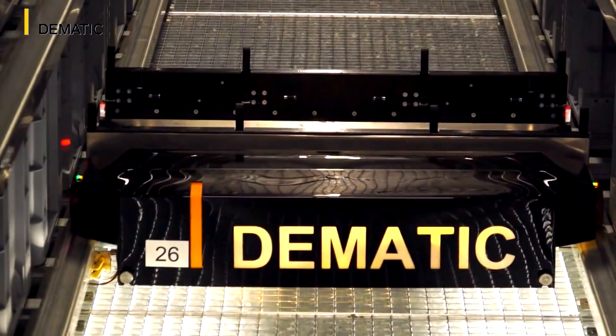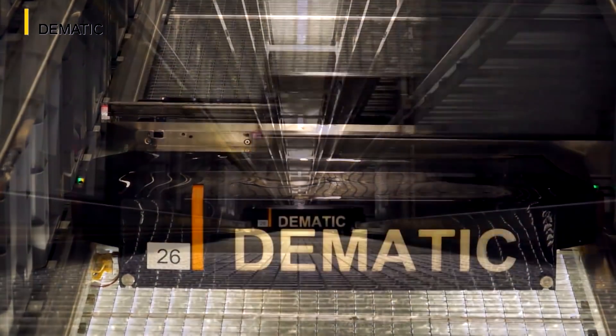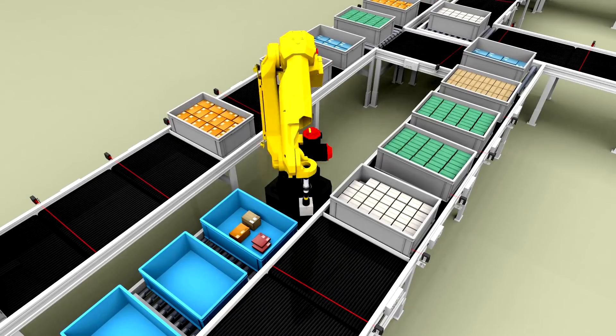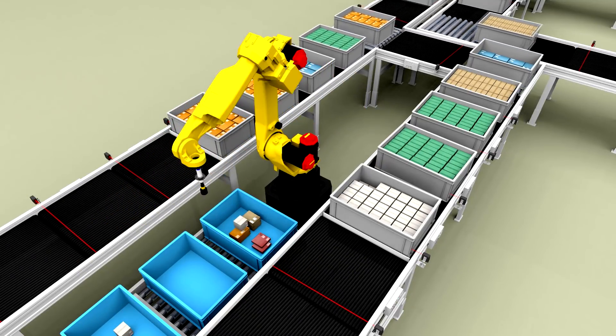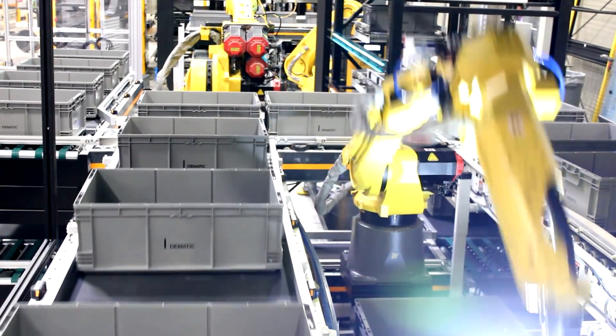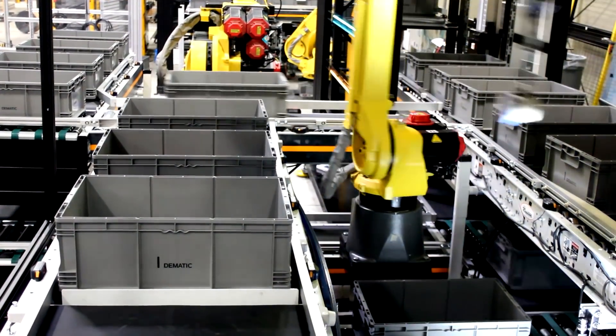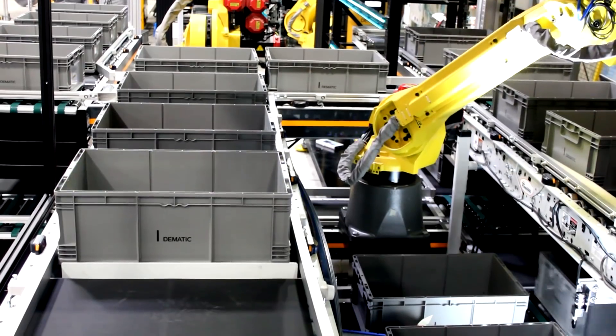Multiple SKUs are accommodated in totes with compartment dividers. The Dematic Warehouse Execution software releases inventory totes in a strategic sequence. The tote arrives at the robotic pick position at the precise time it's needed to assemble the order.